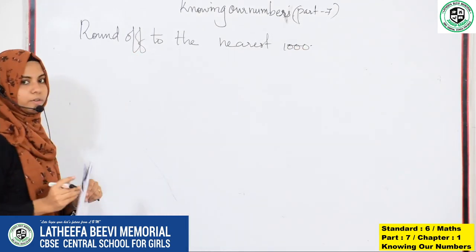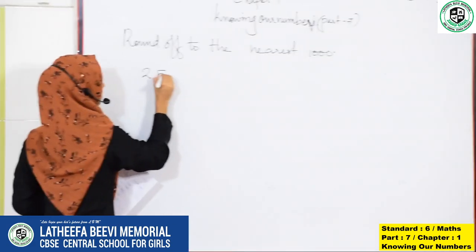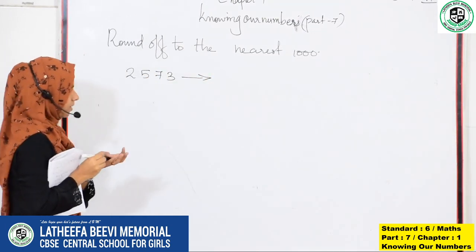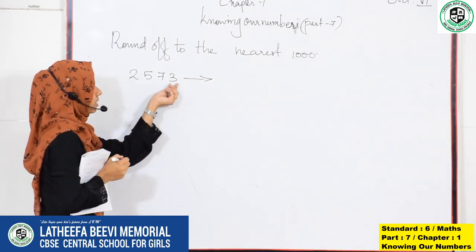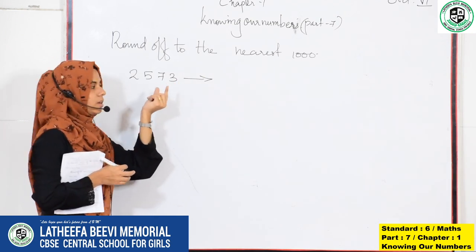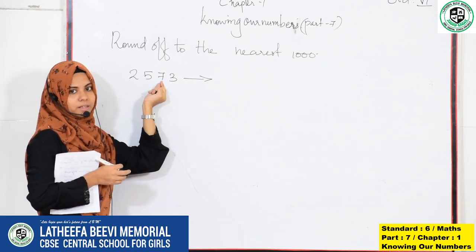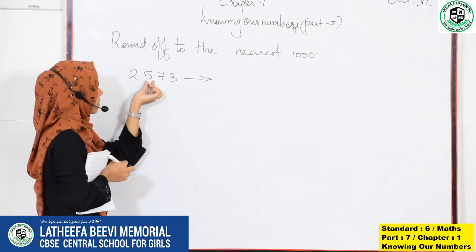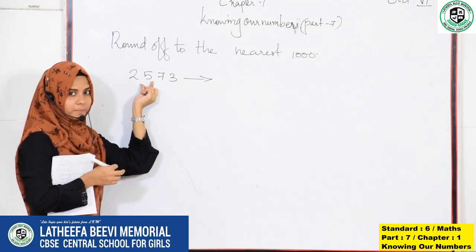Round off to the nearest 1000. In round off to the nearest 10, we check the 1's place. And in round off to the nearest 100, we look at the 10's place. And in round off to the nearest 1000, we are looking at which number is placed in the 100th place.